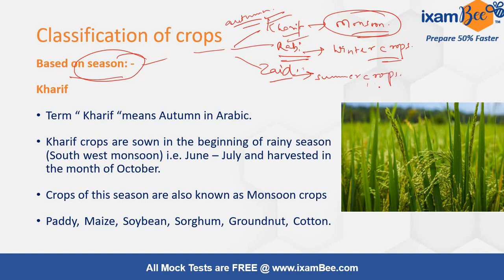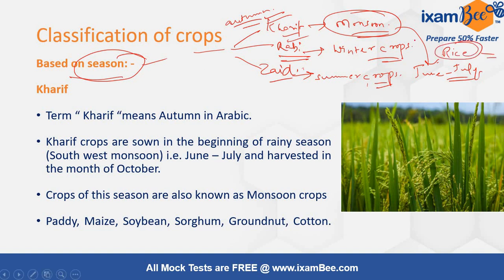Kharif crops are known as the monsoon crops because the sowing is mainly done in the monsoon time, like mainly during the June and July period. We are very familiar with one crop which is widely grown all over the country — that is rice. Rice is an example of a Kharif crop, and there are several crops which come under it.